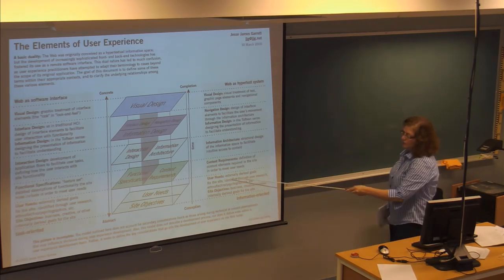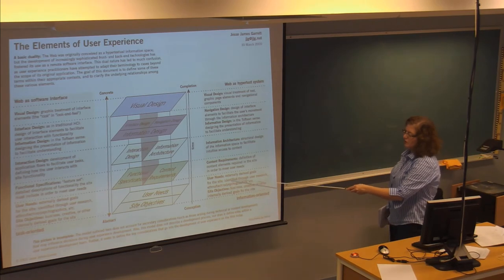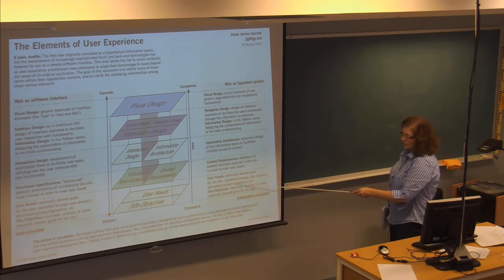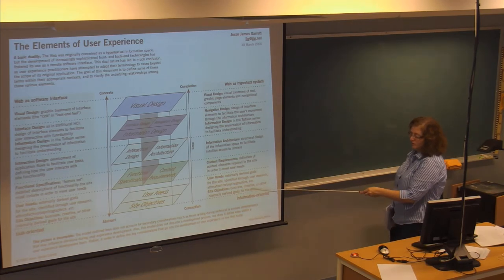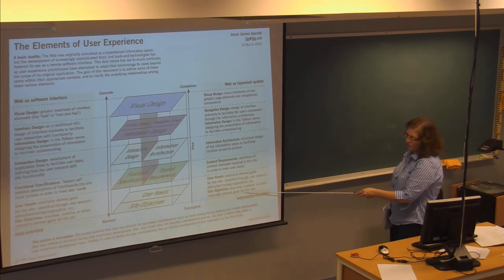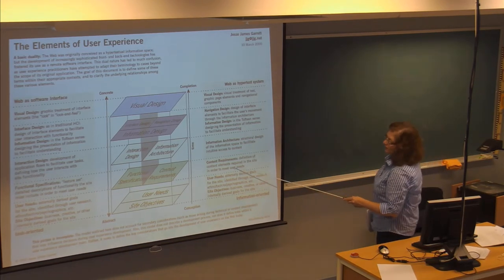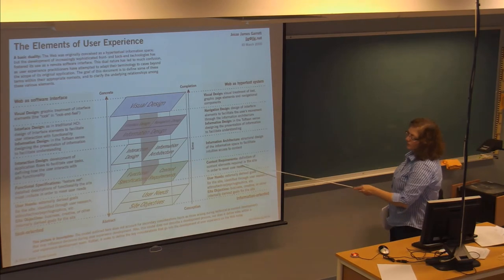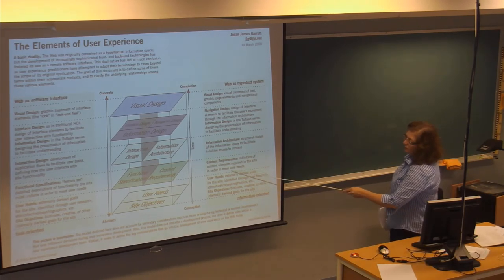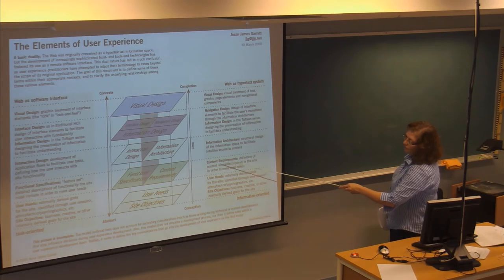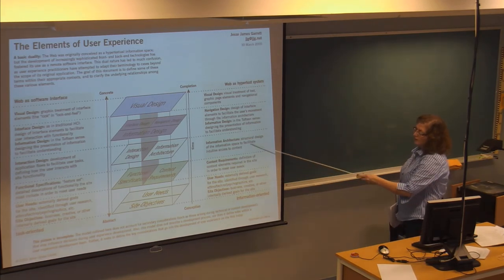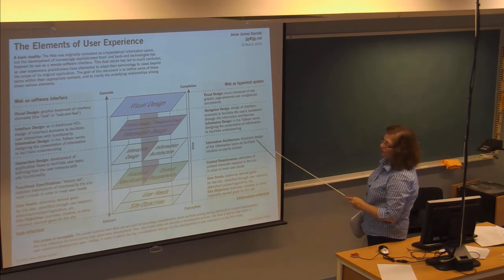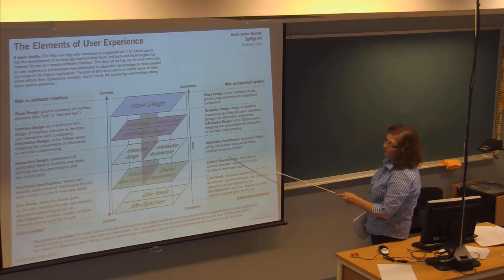First, you need to identify the user needs and the site objectives. The user needs depend on the group that you've identified. And then, the site objective is, is it a business? Is it a creative site? Is it for personal use? The content requirements are the definition of the content elements within the site in order to meet the user needs, the functional specifications. And then, the architecture is the structural design of the information spaces to facilitate access.